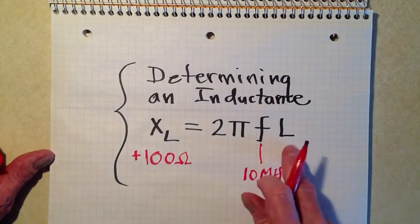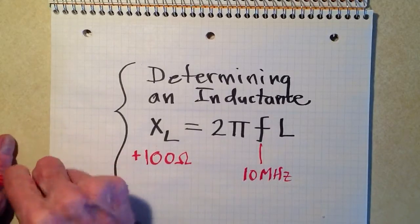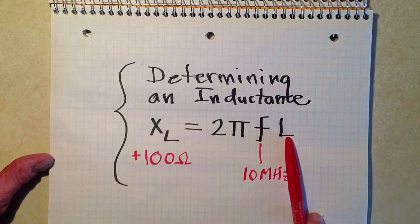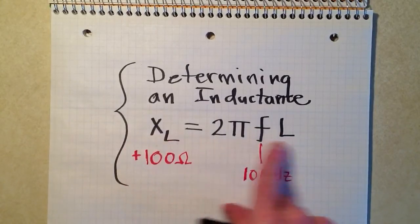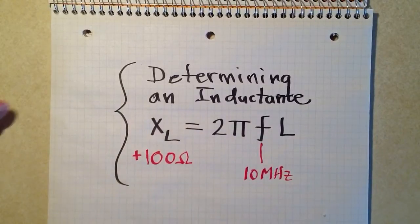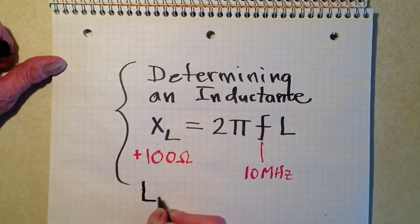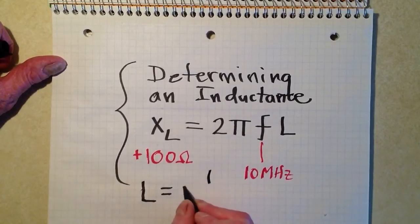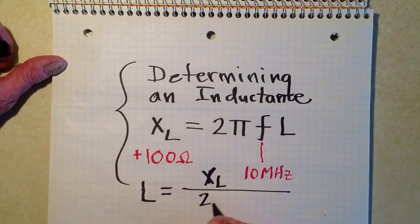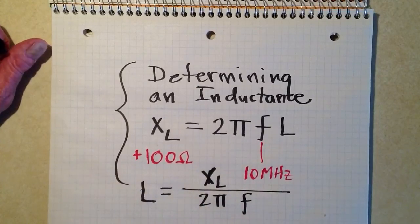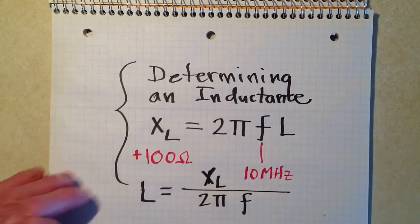Suppose that we have a frequency of 10 megahertz. What is the inductance we will need in order to get 100 ohms of inductive reactance at 10 megahertz? The way we do that is to rearrange the formula using simple algebra so that we get L in terms of everything else. We divide both sides by 2πf and swap sides, giving us: L in microhenrys equals X_L divided by 2πf, where f is in megahertz. So we have f = 10 and X_L = 100.